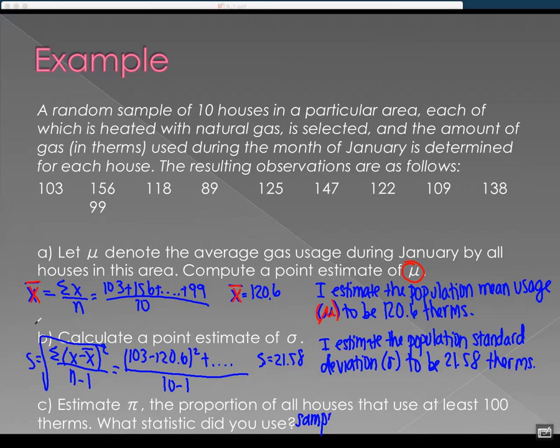Okay, so I'm going to use sample proportion, which is P. Okay, based on our sample, what proportion of houses use at least 100 therms?